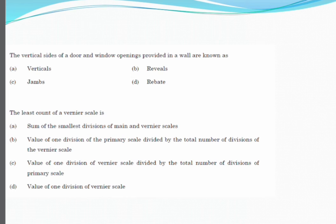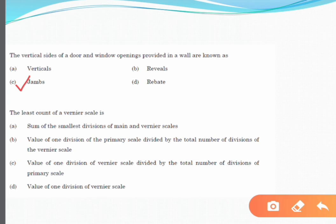The vertical sides of a door and window openings provided in a wall are known as? The correct answer is jambs. Jambs are defined as the side posts or lining of a doorway or other openings. Other terms: a reveal is seen at the edge of a door or window; a rebate is a groove cut into a piece of material; option C, jambs, is the correct answer as they are the vertical sides of openings.